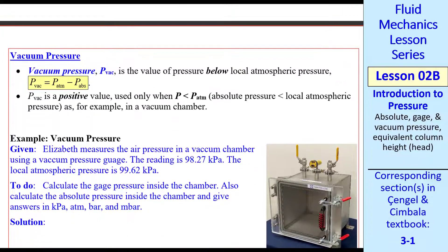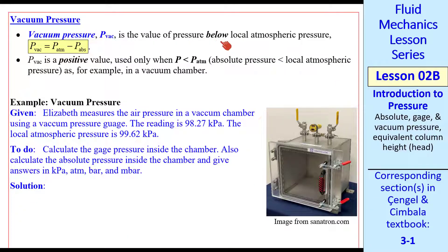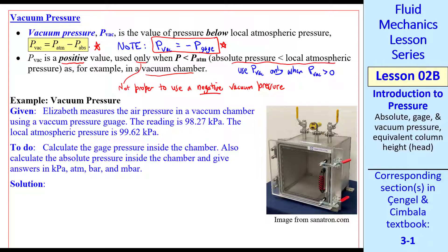Now let's look at vacuum pressure. PVAC is the value of pressure below atmospheric pressure. Here's the equation. If we compare with the above definition for gauge pressure, we see that they're the same except for a negative sign. PVAC is minus P gauge. But PVAC is used only when it's positive. In other words, when the pressure is less than atmospheric pressure. For example, in a vacuum chamber. I say only because it's not proper to use a negative vacuum pressure. In other words, use PVAC only when PVAC is greater than zero.